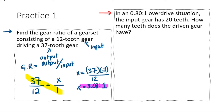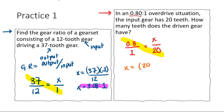For the second practice problem: the gear ratio is 0.8 to 1 — overdrive, because it's less than 1. The input gear has 20 teeth. How many teeth does the driven gear have? In overdrive, a large gear drives a smaller gear, so we expect fewer than 20 teeth. Setting up: X over 20 equals 0.8 over 1. X equals 20 times 0.8 divided by 1, which equals 16. The output gear has 16 teeth.